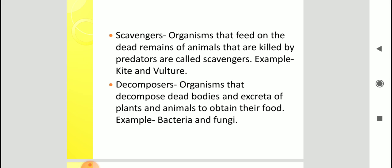Then, decomposers. Decompose means to convert something complex into simple. So decomposers are those organisms that can decompose the dead bodies and excreta, plant and animal excreta. So they obtain their food from these things. Examples are bacteria and fungi. They are examples of decomposers. Alright. So we studied five different types of heterotrophs. Herbivores, carnivores, omnivores, scavengers and decomposers. You should know examples of each. That is very important.